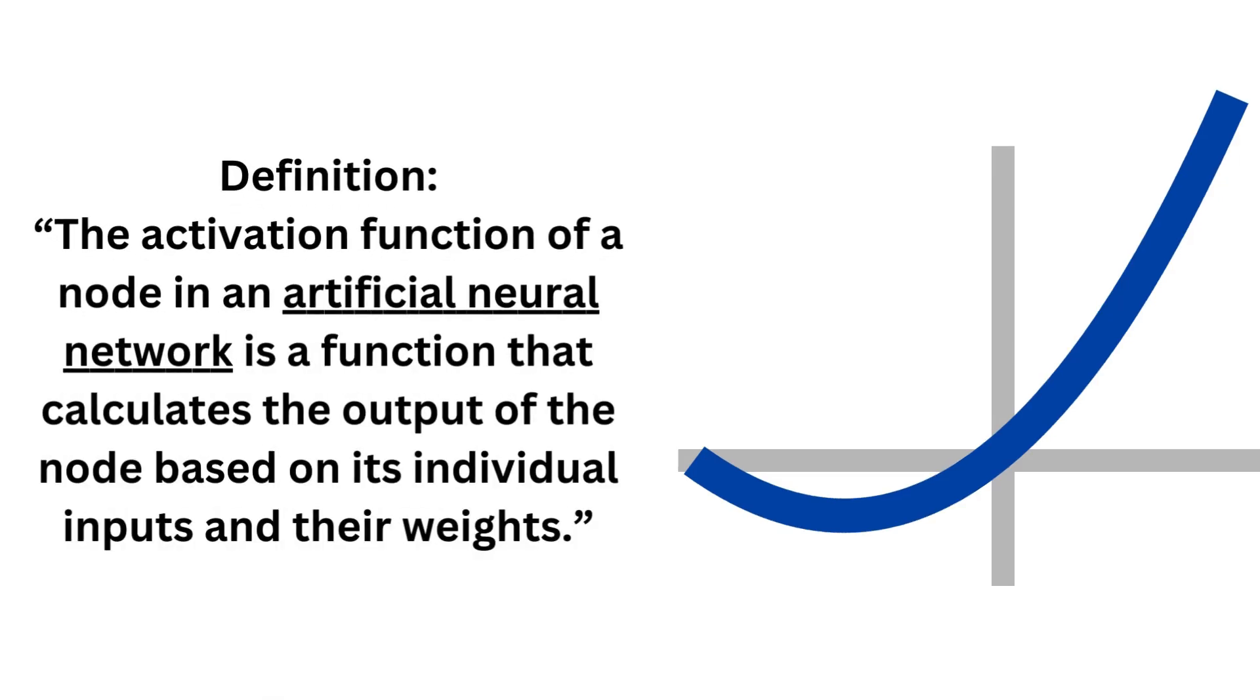Okay, so a definition. The activation function of a node in an artificial neural network is a function that calculates the output of the node based on its individual inputs and their weights.